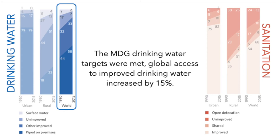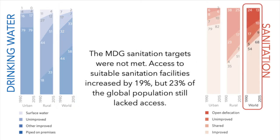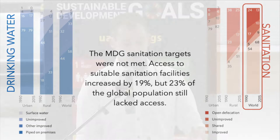The MDG drinking water success left only about 9% of the world's population lacking access to improved drinking water facilities. The story wasn't quite as good for sanitation — we didn't meet the MDG sanitation target in 2015. While there was an increase in access to sanitation facilities of about 19% globally, still 23% of the world's population lacked access to improved sanitation, which is now a real focus of SDG 6.